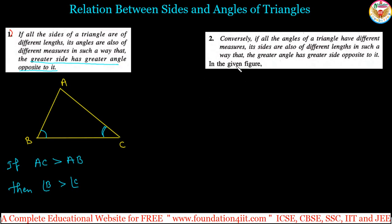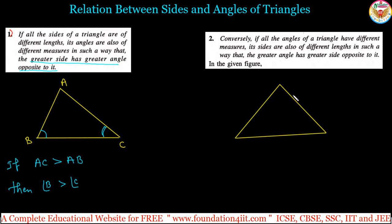Conversely, the second property: if all the angles of a triangle have different measures, its sides are also different lengths, in such a way that the greater angle has a greater side opposite it. Let us take triangle ABC to illustrate this.